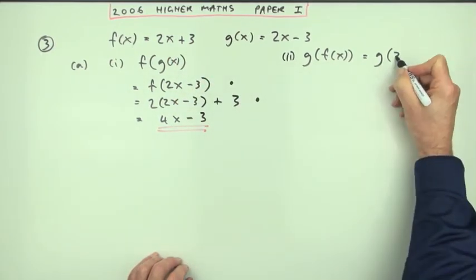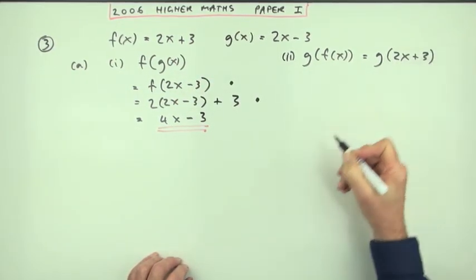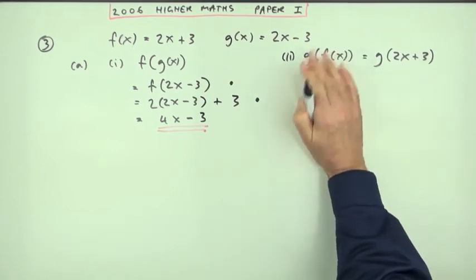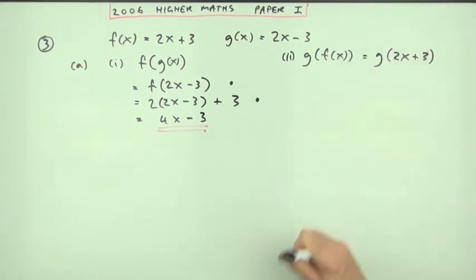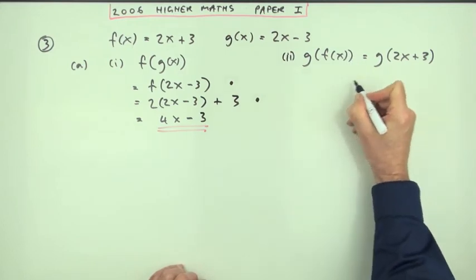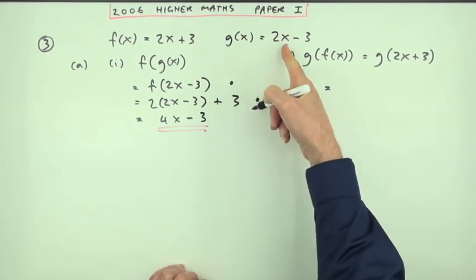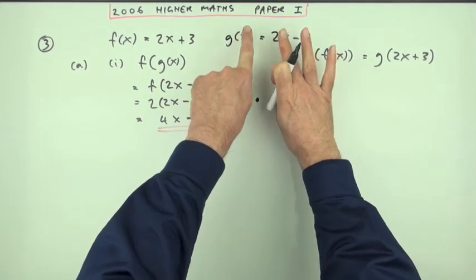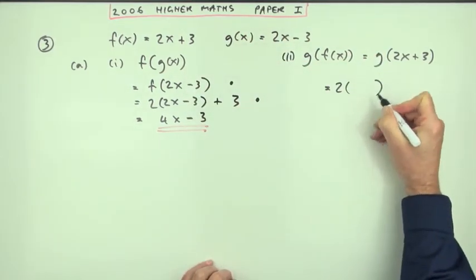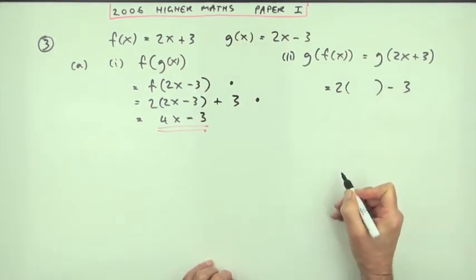So if g is going to act on f of x, it's going to act on 2x plus 3. And what does g do? It doubles it; whatever you put in it doubles it and takes away three. So it'll double it and take away three. And what's it going to double? This thing: 2x plus 3.